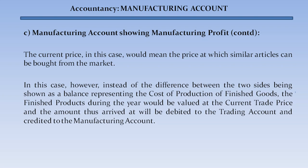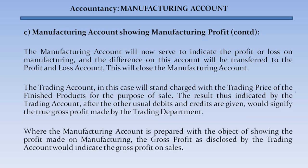The current price in this case would mean the price at which similar articles can be bought from the market. Instead of showing the difference as a cost of production, the finished products during the year would be valued at the current trade price. The amount thus arrived at will be debited to the trading account and credited to the manufacturing account. The manufacturing account will now indicate the profit or loss on manufacturing, and this difference will be transferred to the profit and loss account. The trading account will then stand charged with the trading price of finished products for the purpose of sale, indicating the true gross profit made by the sales department.